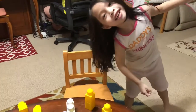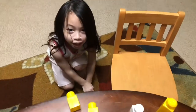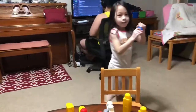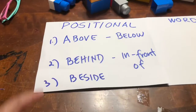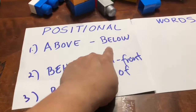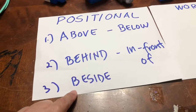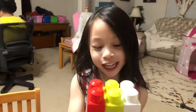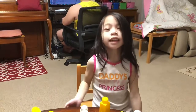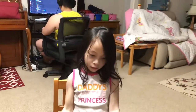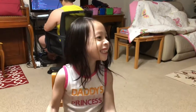You put the Lego beside the chair — beside. Now come over here, so what did you learn today? Positional words! What are they? Above, below, behind, in front of, and beside. And daddy, why did you take my Lego? Well, I just borrowed it. Okay, can you say bye-bye now? Bye-bye! I'm gonna play with my Lego — it's so fun! Thank you friends for watching — bye-bye!